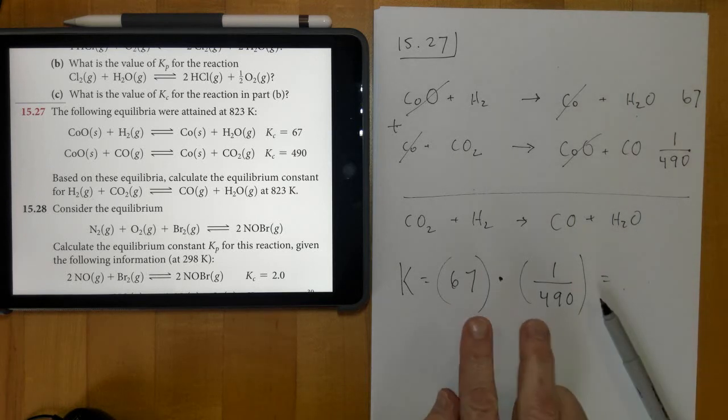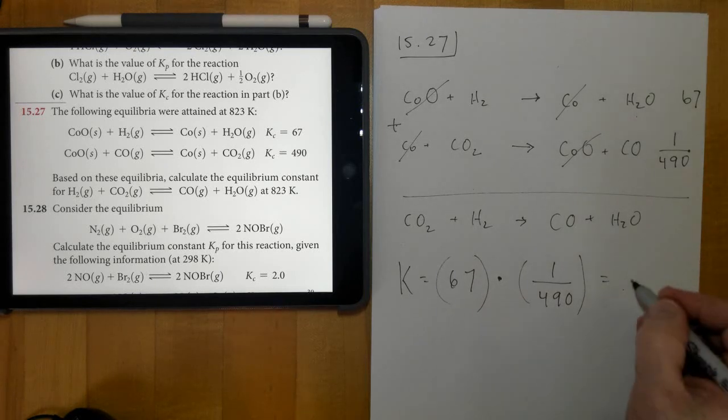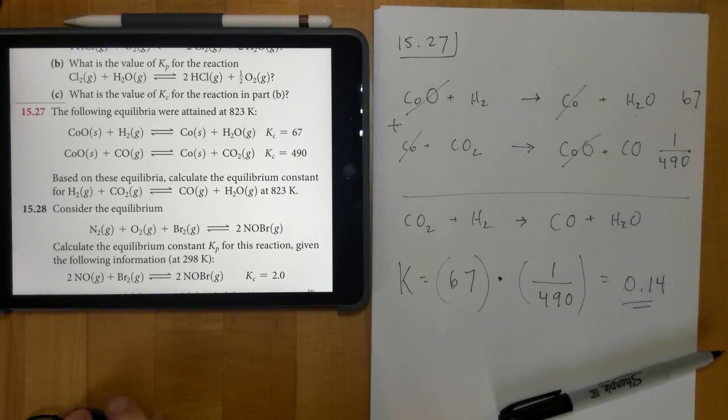And so when you do this on your calculator, you end up getting 0.14 for the new K. There's 27.